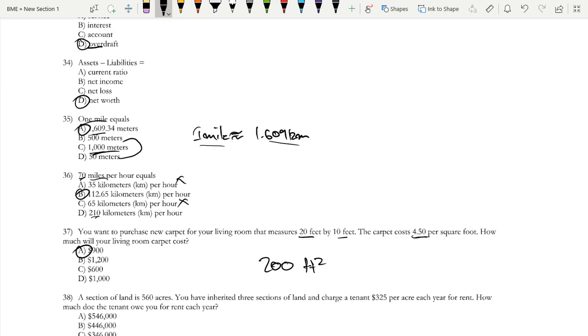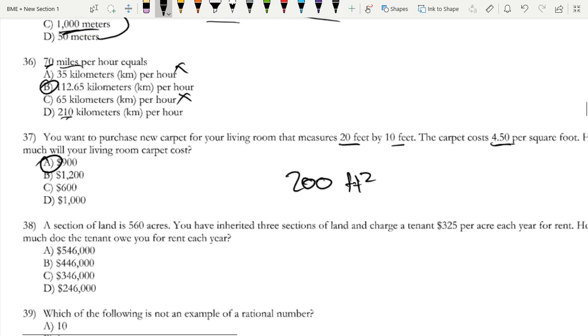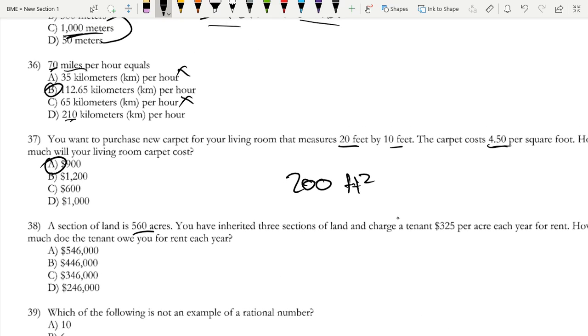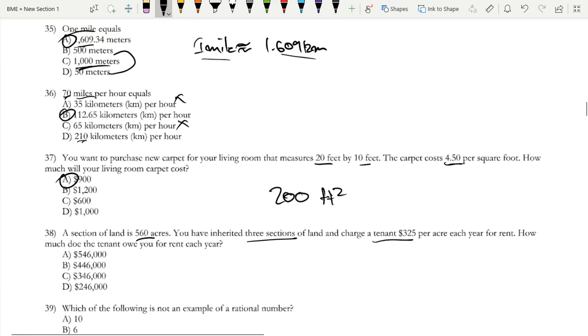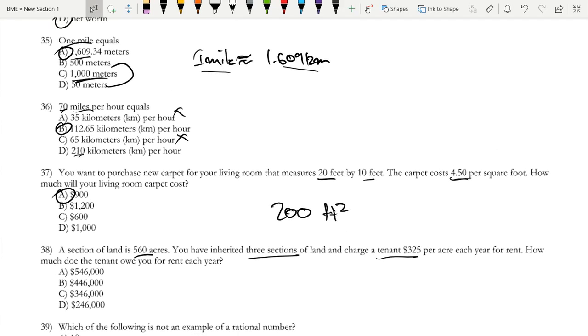A section of land is 560 acres. You have inherited three sections of land and charge a tenant $325 per acre a year for rent. How much does the tenant owe you? So you do 560 acres times $325 per acre, and remember, three sections of land, so now it's times three.